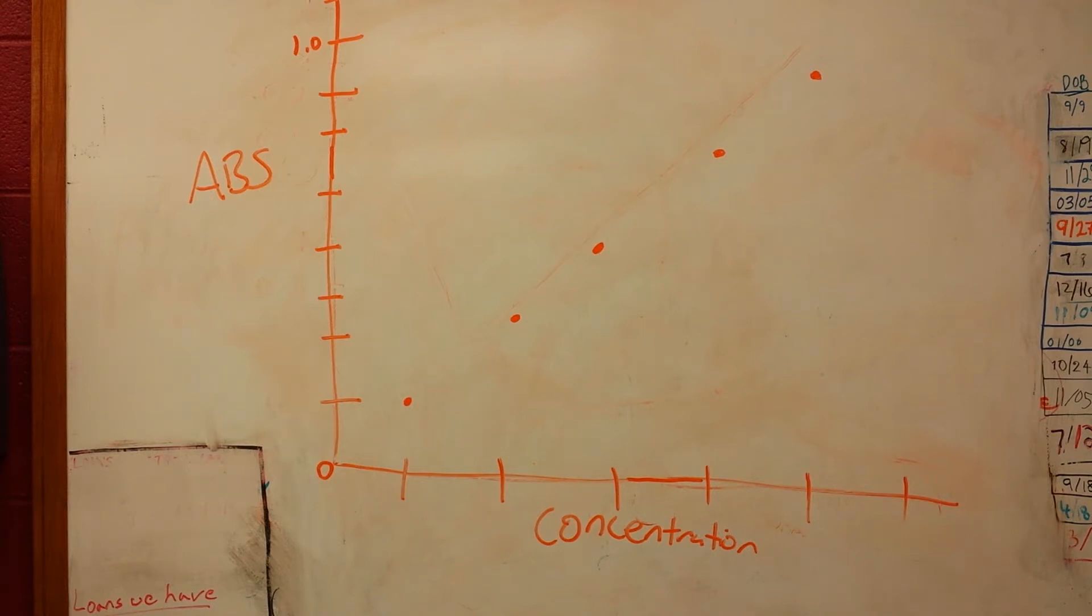Then, we'll move on and see the absorbance at this wavelength at various concentrations, and we'll establish a standard curve. The standard curve is useful for going back and being able to figure out the concentrations of unknown solutions.